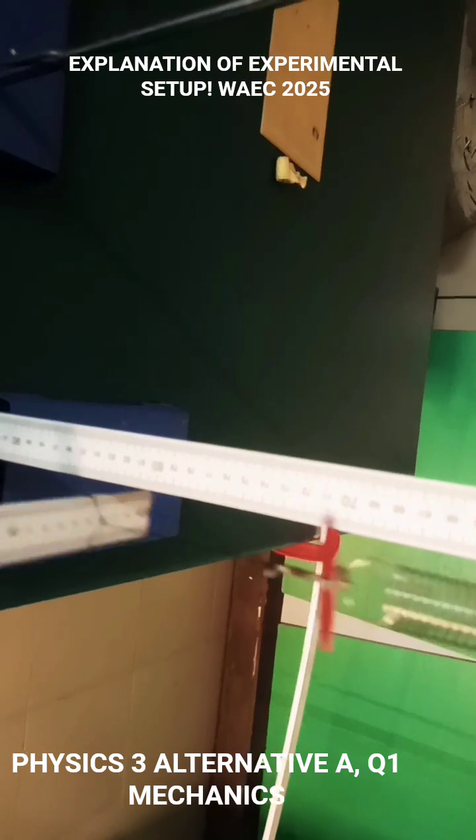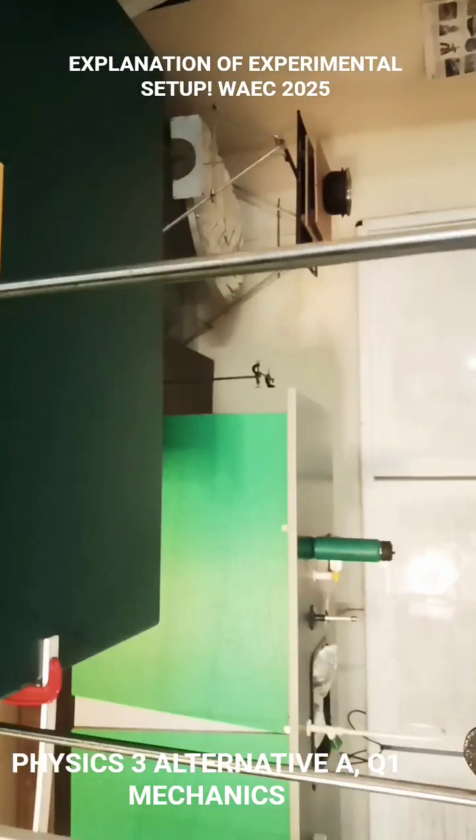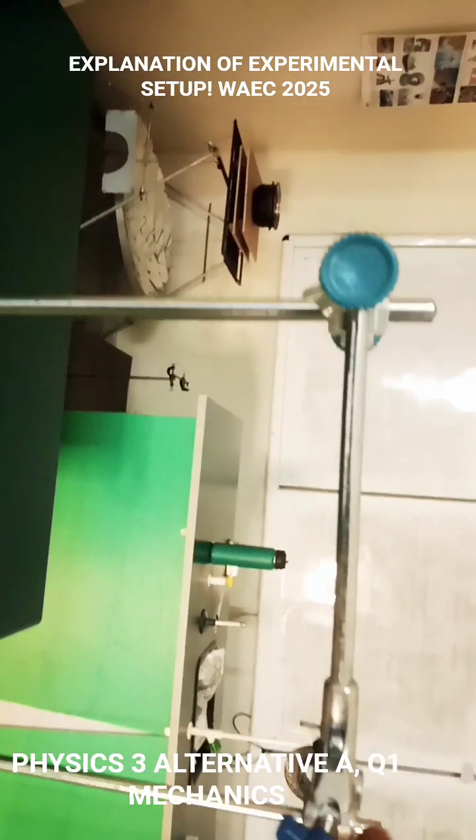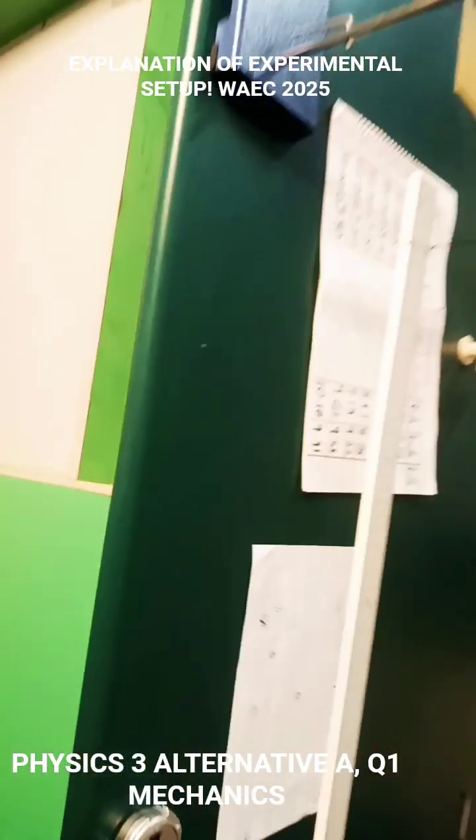And this is the second meter rule which will be used to measure the extensions that were produced on the string here. And this is the third retort stand which is used to hold this arrangement, a very perfect arrangement.